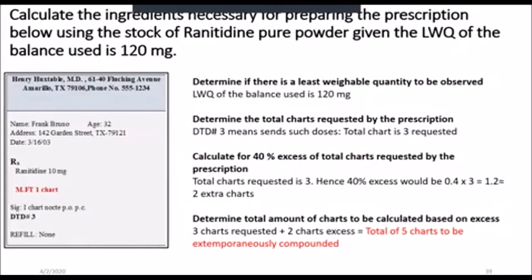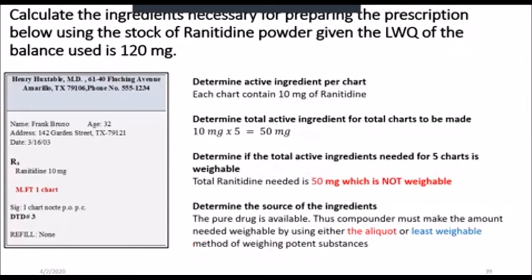The first thing we're going to look at is the least weighable quantity, which is 120 mg. The number of doses to be supplied is three, but because we're working with powders and we will invariably have some loss, we're going to calculate 40% excess of the total powders requested and therefore we're going to be making a total of five charts. Each chart will contain 10 mg of ranitidine. Because we're calculating for five charts, the total active ingredient will be 50 mg.